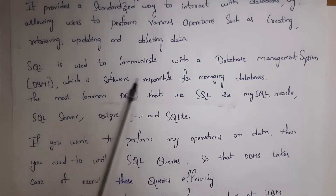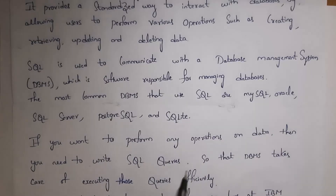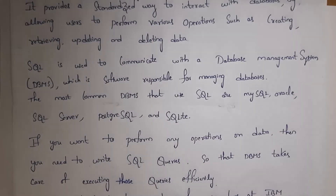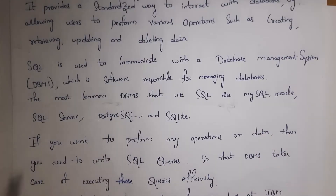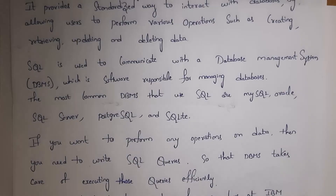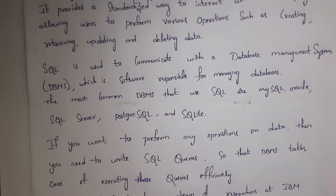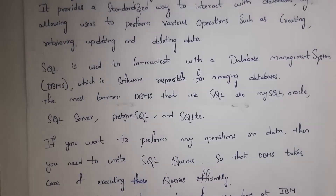SQL is used to communicate with a database management system, which is a software used to manage databases. Some popular DBMS softwares are MySQL, Oracle, SQL Server, PostgreSQL, and SQLite. If you want to perform any operation on a database, you need to write SQL queries so that the DBMS software will execute those queries.